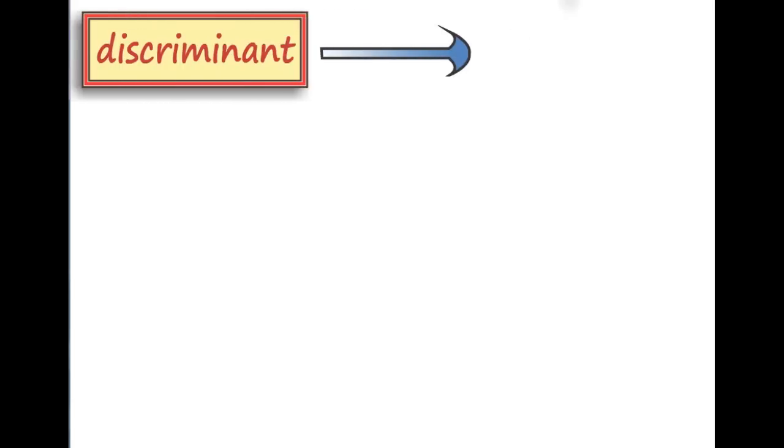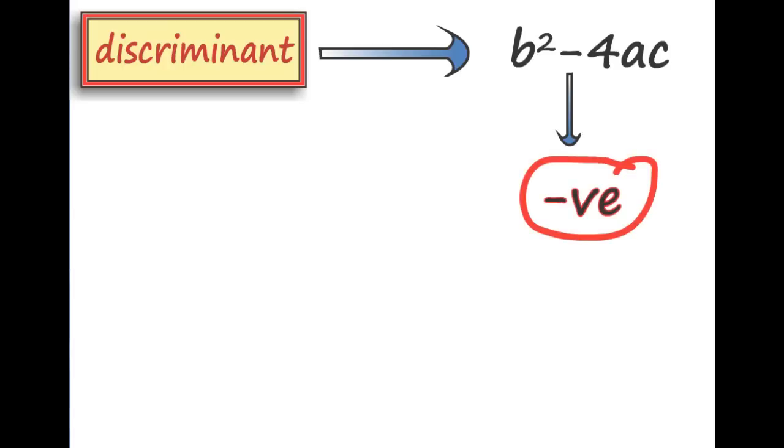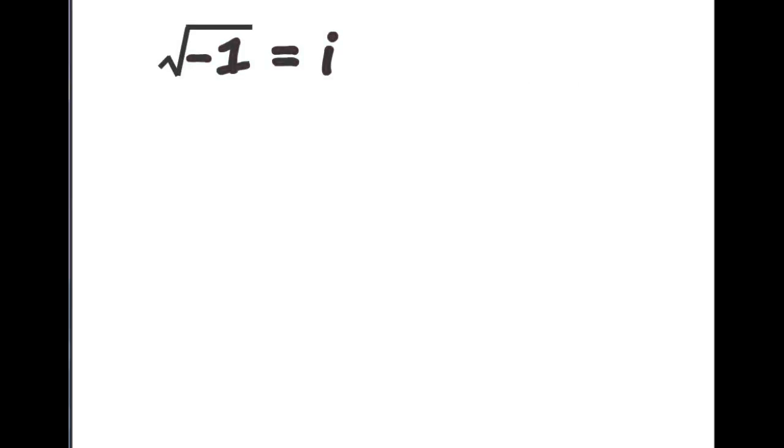Till now, while solving quadratic equations, if we got a negative quantity inside the discriminant, we would leave the equation and happily claim that there are no real roots. But no more. Let us now define the quantity root of minus 1 as i, i for imaginary.